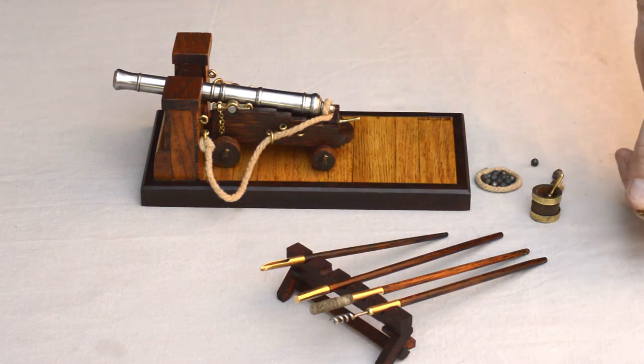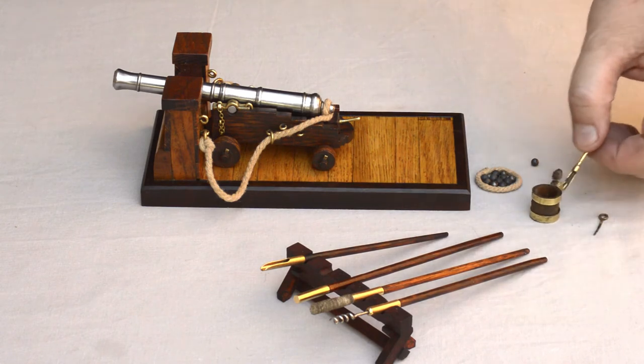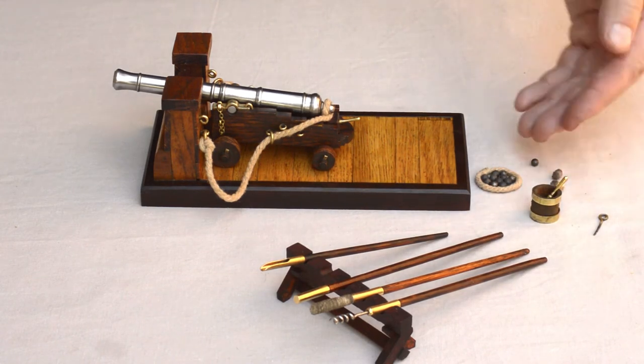This over here is known as the touch hole reamer. We also have a small ladle, in this case used for priming this model gun.